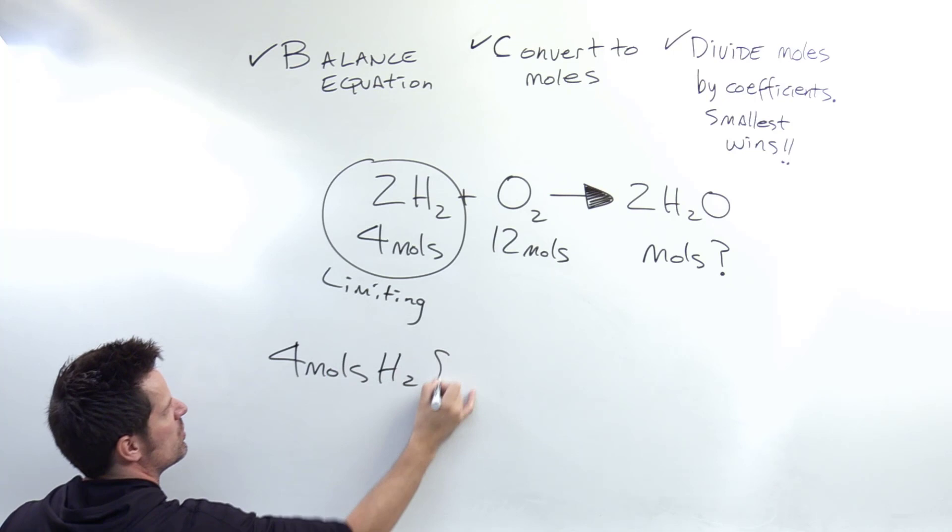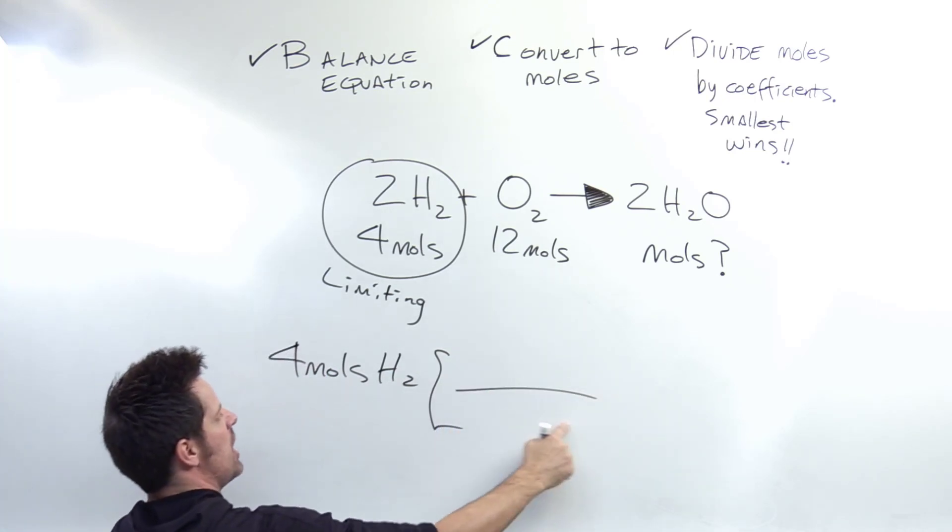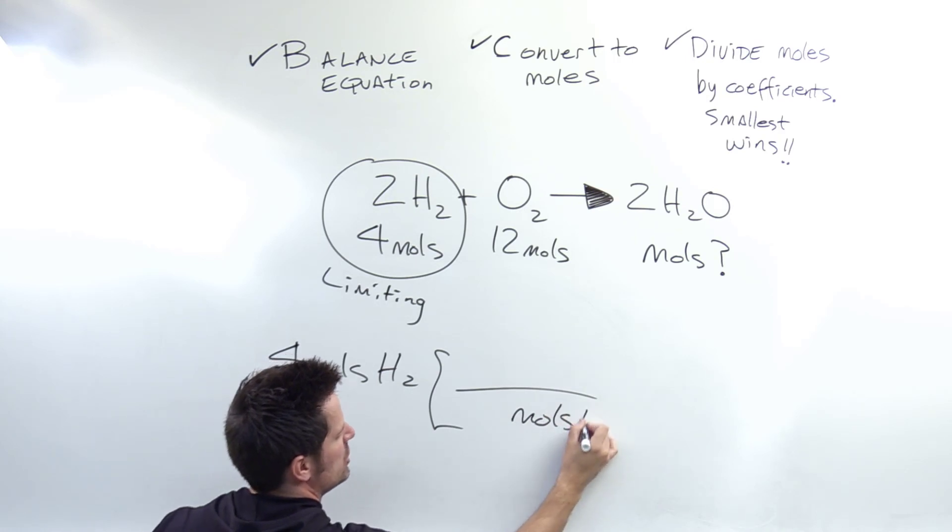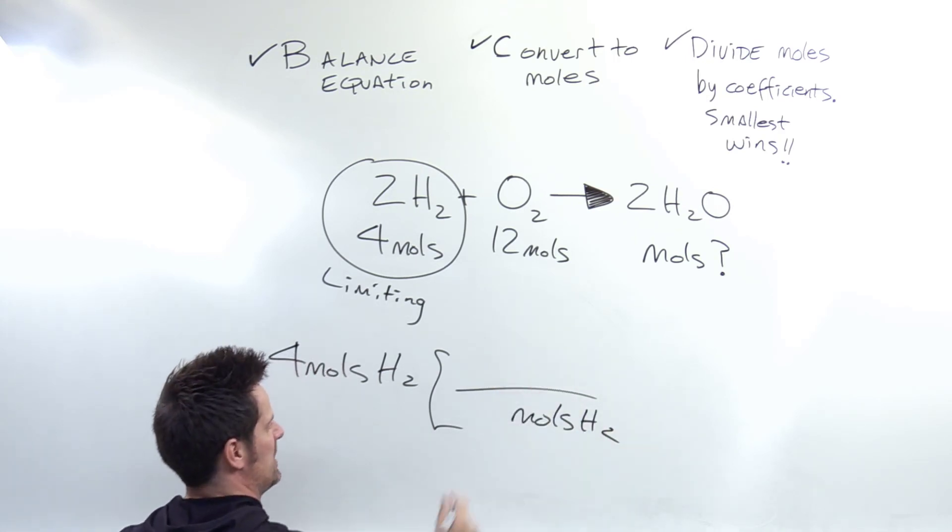I write down four moles H2 right here. That's what I've got. In the denominator here, the units will match the numerator units right here. So I'll write moles H2.